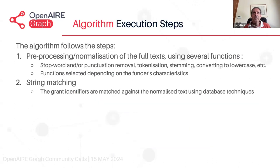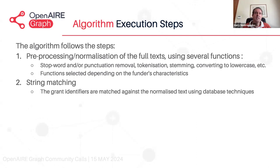At a higher level, let me go through the algorithm execution steps. The first step is pre-processing normalization of the full text. There are many functions depending on the case: stop word or punctuation removal, tokenization, stemming, and converting to lowercase. These are standard things done to facilitate the mining. Then there's the main stage of string matching: the grant identifiers and projects are matched against the normalized text using database techniques, which are efficient and quick. At this stage, it's a very greedy algorithm — we will match anything that looks like the project number from our list.